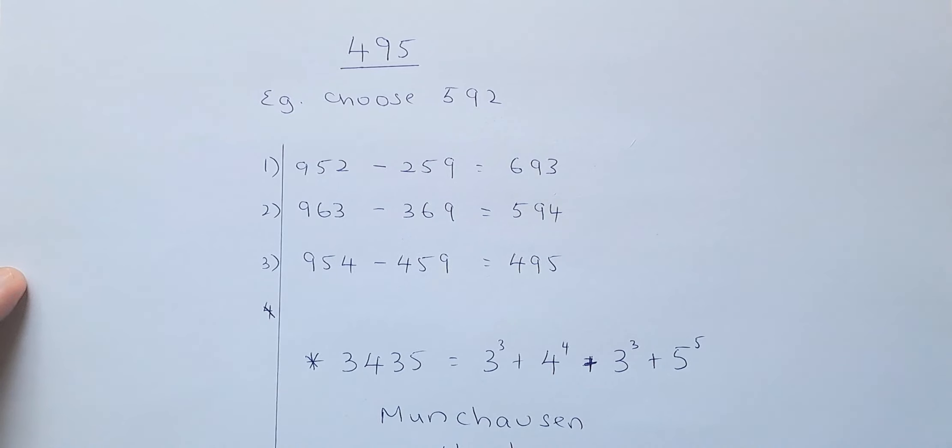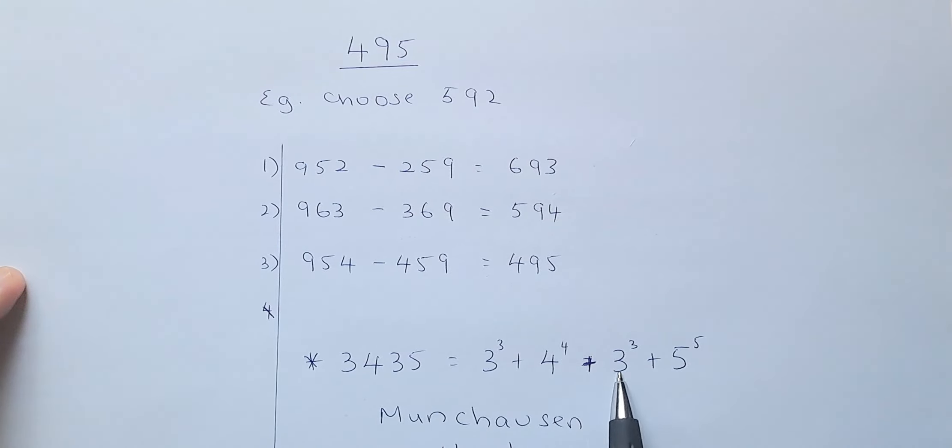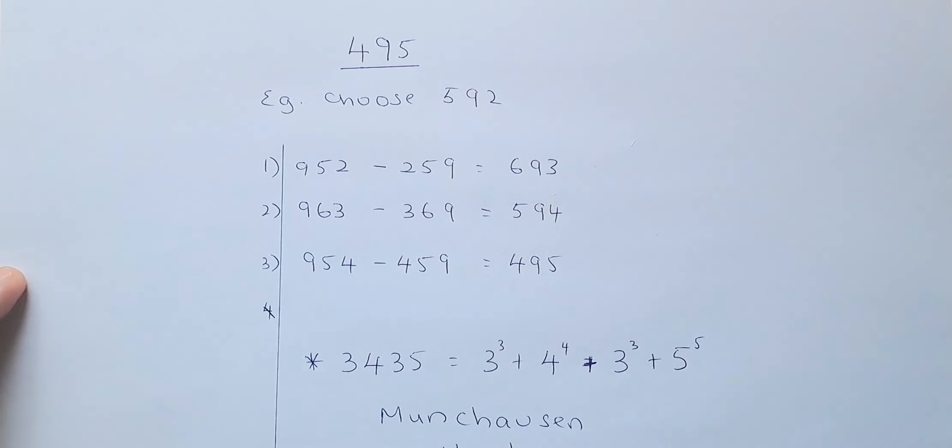And the other special number that I want to mention is 3435. This is called the Munchausen number, because that is the only number in math where you cube it. So 3 cubed, you take the cube of the same number, 3 cubed, plus 4 to the power of 4, plus 3 to the power of 3, plus 5 to the power of 5, will give you back the number 3435. So that is interesting numbers for today.